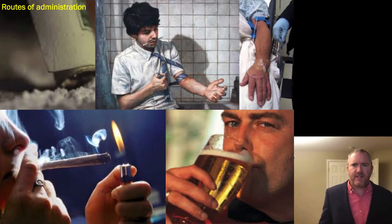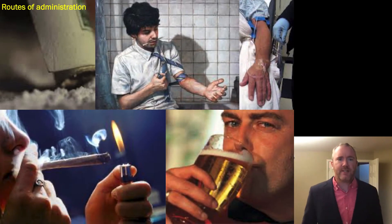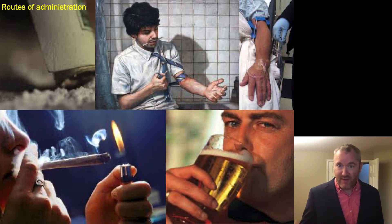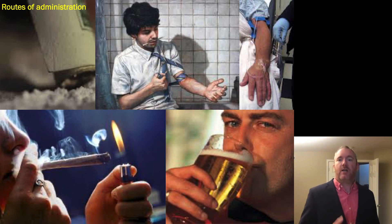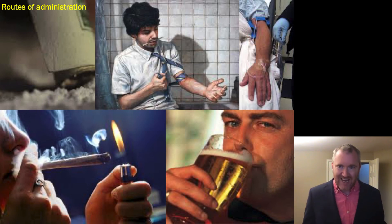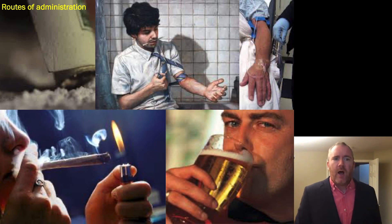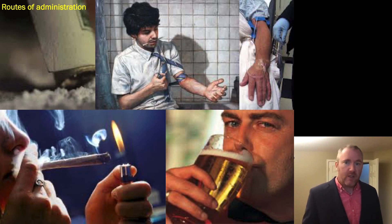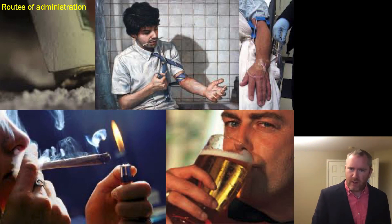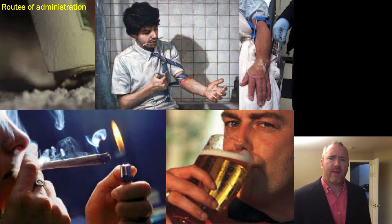One key concept in pharmacokinetics is route of administration, which is very much related to bioavailability. If you took a drug intravenously, you would maximize bioavailability and eliminate what's known as lag time — you'd get almost instantaneous effects, especially if the drug passes the blood-brain barrier. Smoking would be one of the additional very fast methods to get drug into the system.